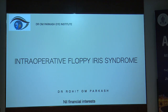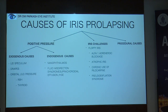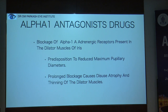I will be talking about intraoperative floppy iris syndrome. The causes of iris prolapsing include positive pressure and iris challenges as far as floppy iris is concerned — primarily because of alpha-1 adrenergic blockage, but also due to atrophic iris, chronic use of pilocarpine, and pseudoexfoliation syndrome.